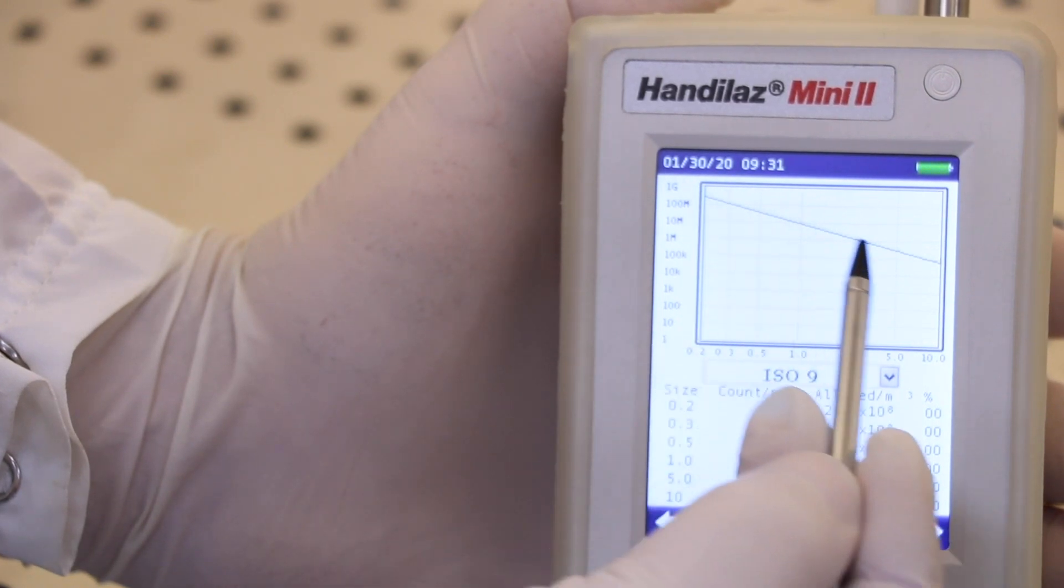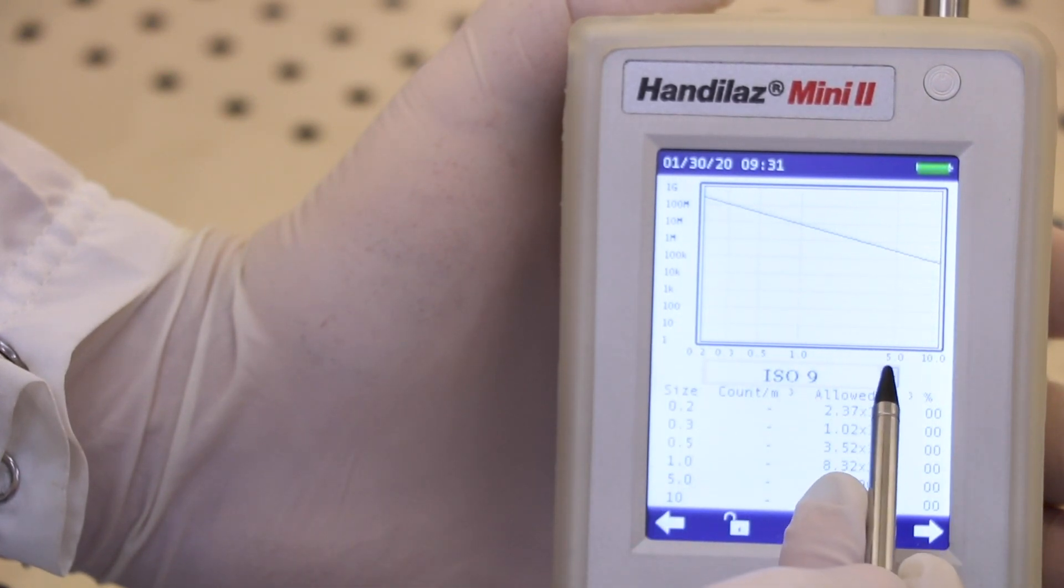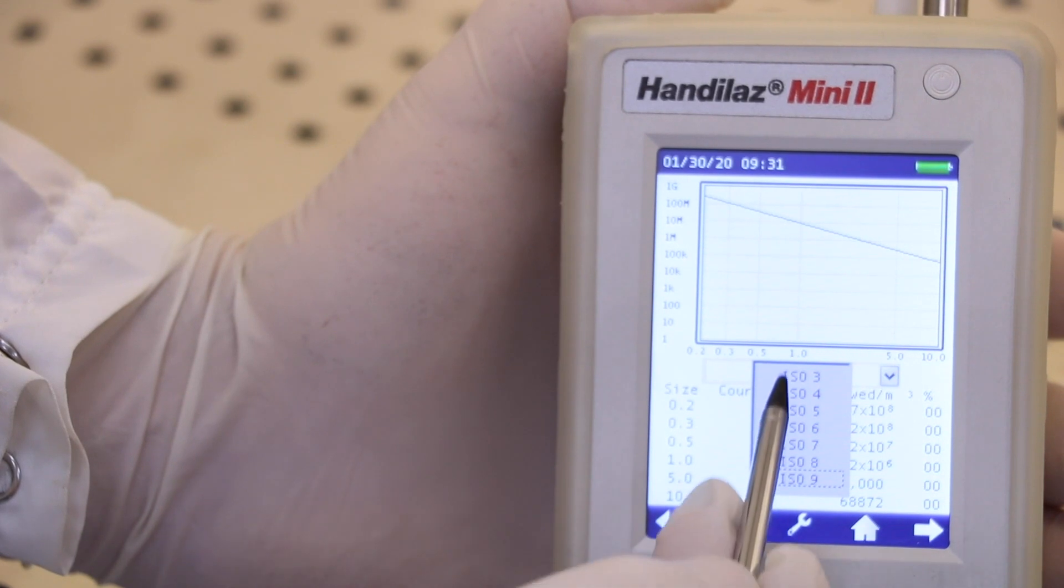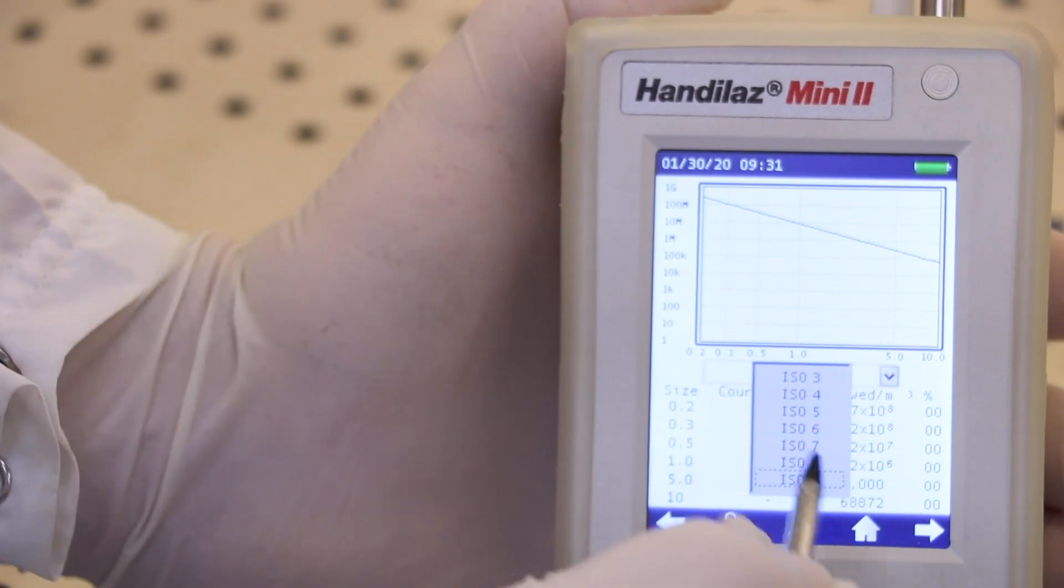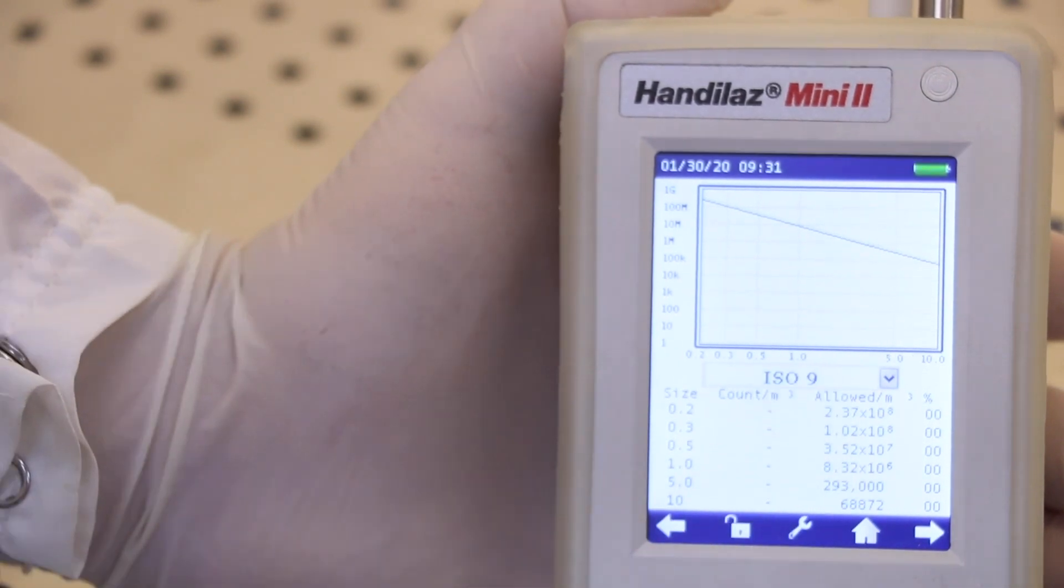The black line indicates the threshold for meeting the spec. You can change this level by simply selecting the ISO class from the pull-down menu. So let's see where we end up, starting the cycle as the unit auto-calibrates for flow.